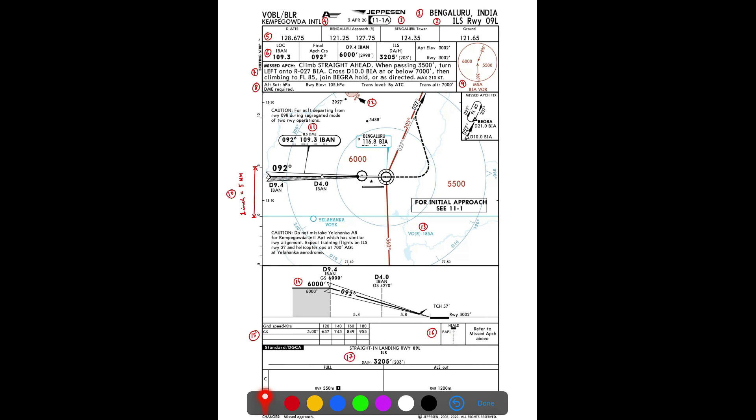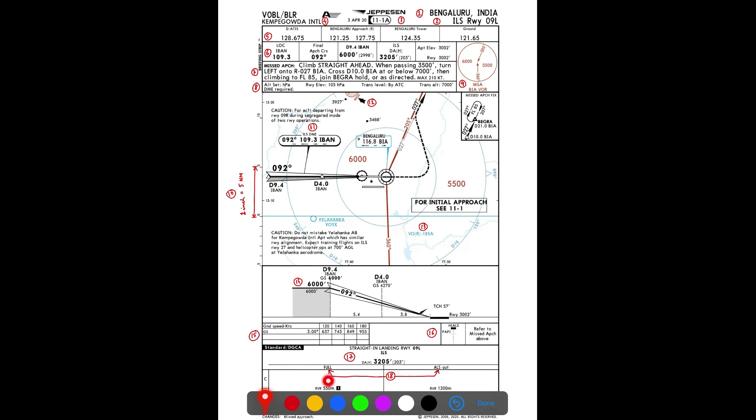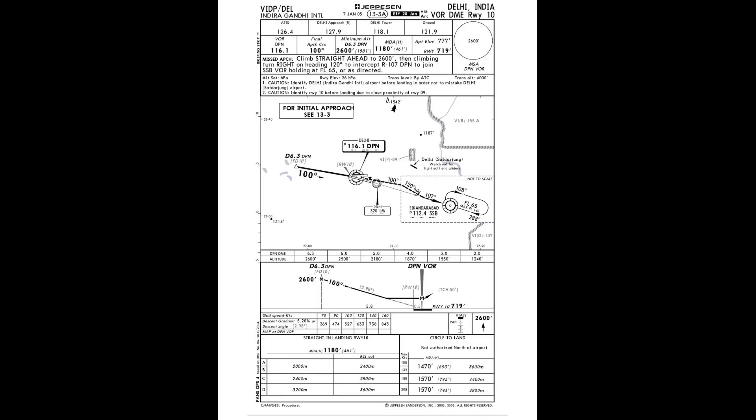The next item covers the straight-in landing minima for Runway 09 Left. The lowest decision altitude is 3,205 feet. The RVR is conditional: when full lighting systems are available, the RVR is 550 meters; if the approach lighting system is out, the RVR increases to 1,200 meters — a significant difference.